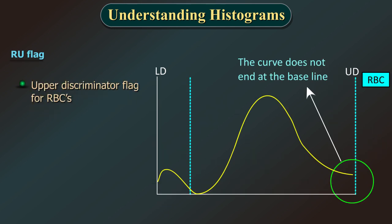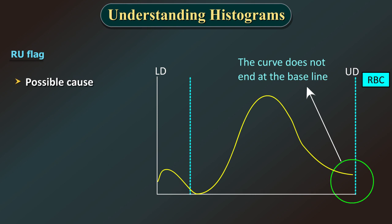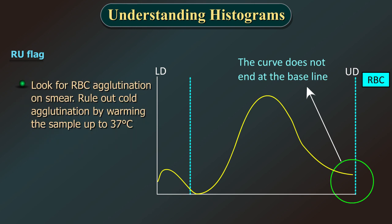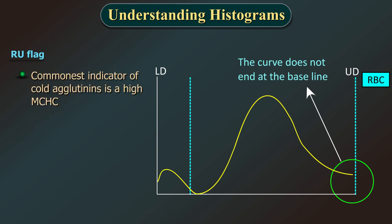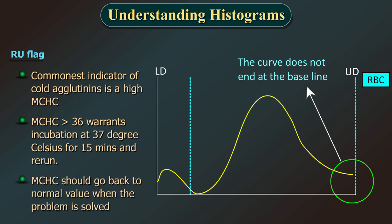RU flag (upper discriminator flag for RBCs): this generally happens when the upper discriminator exceeds 5% of the preset height value. Possible causes include cold agglutination and rouleaux formation. RBC agglutination might cause a low, incorrect RBC count and affect parameters HB, MCV, MCH, and MCHC. Look for RBC agglutination on smear. Rule out cold agglutination by warming the sample to 37°C. The commonest indicator of cold agglutination is a high MCHC. An MCHC greater than 36 warrants incubation at 37°C for 15 minutes and rerun; MCHC should return to normal when the problem is solved.